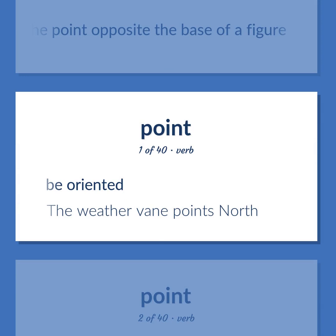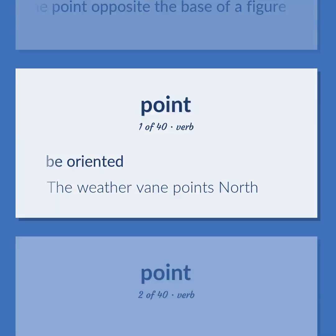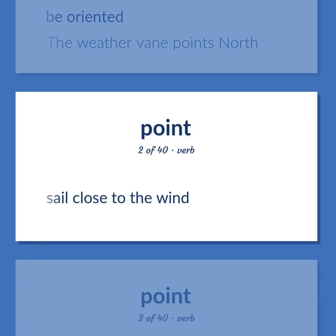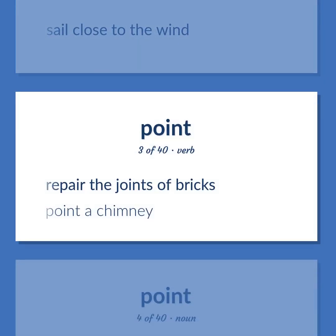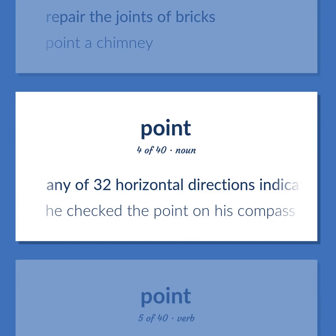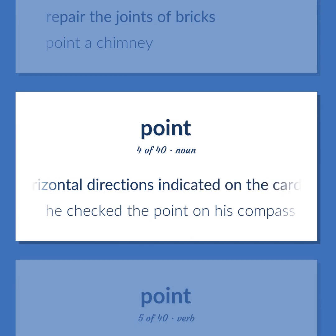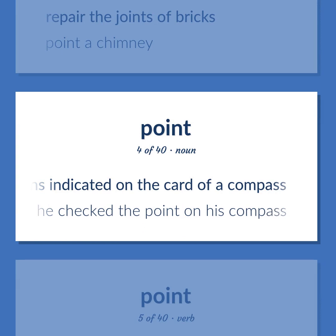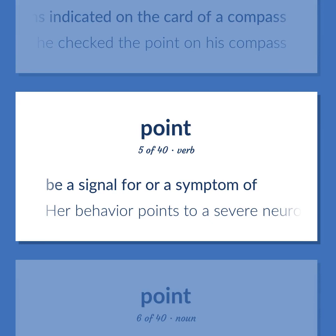Point: Be oriented — the weather vane points north. Sail close to the wind. Repair the joints of bricks; point a chimney. Any of 32 horizontal directions indicated on the card of a compass — he checked the point on his compass. Be a signal for or a symptom of — her behavior points to a severe neurosis.